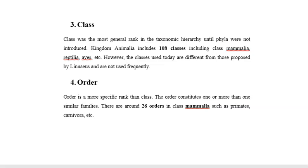The next category is order. Order is a more specific rank than class. An order constitutes one or more than one similar family. There are around 26 orders in class Mammalia, such as Primates, Carnivora, etc.